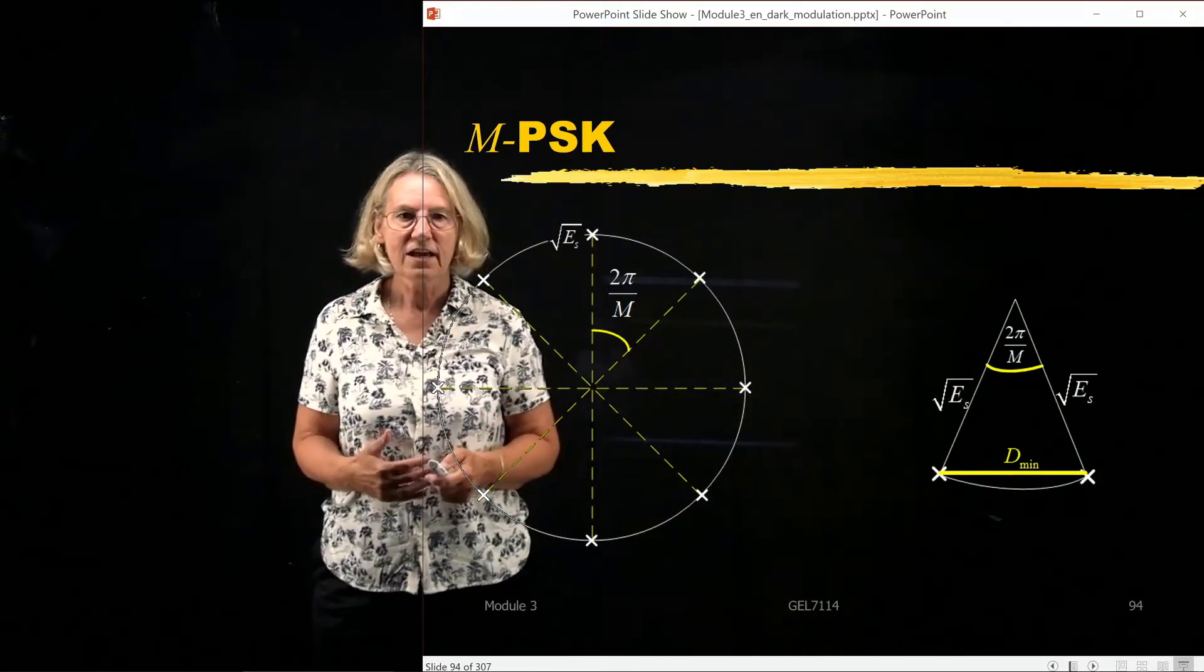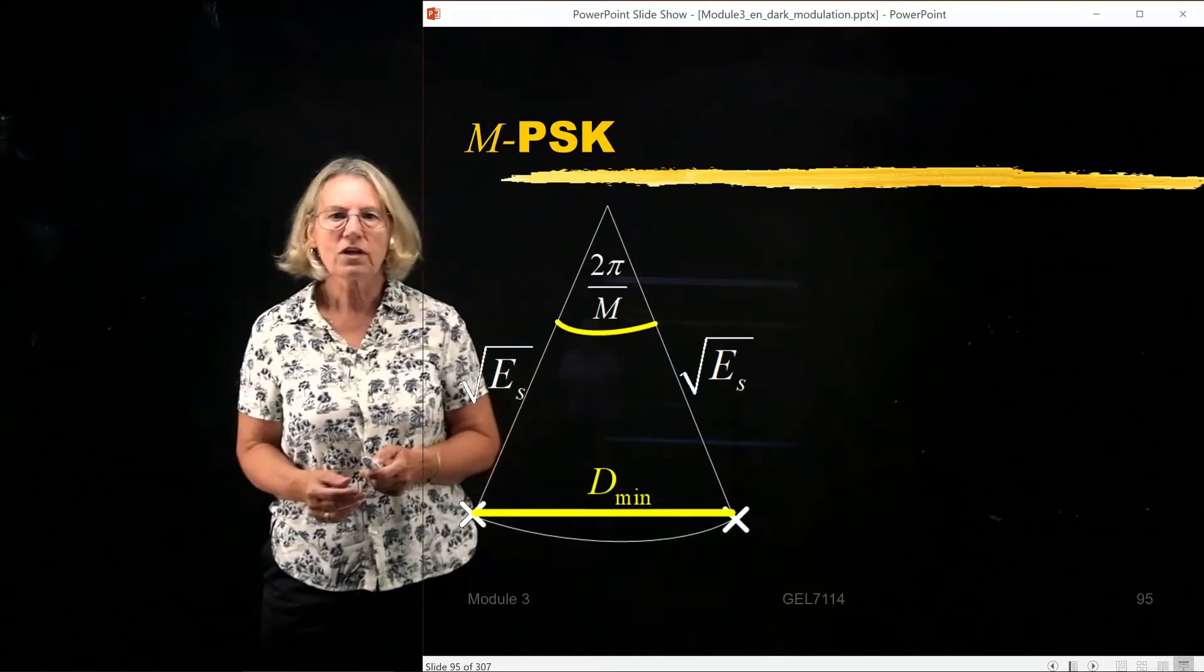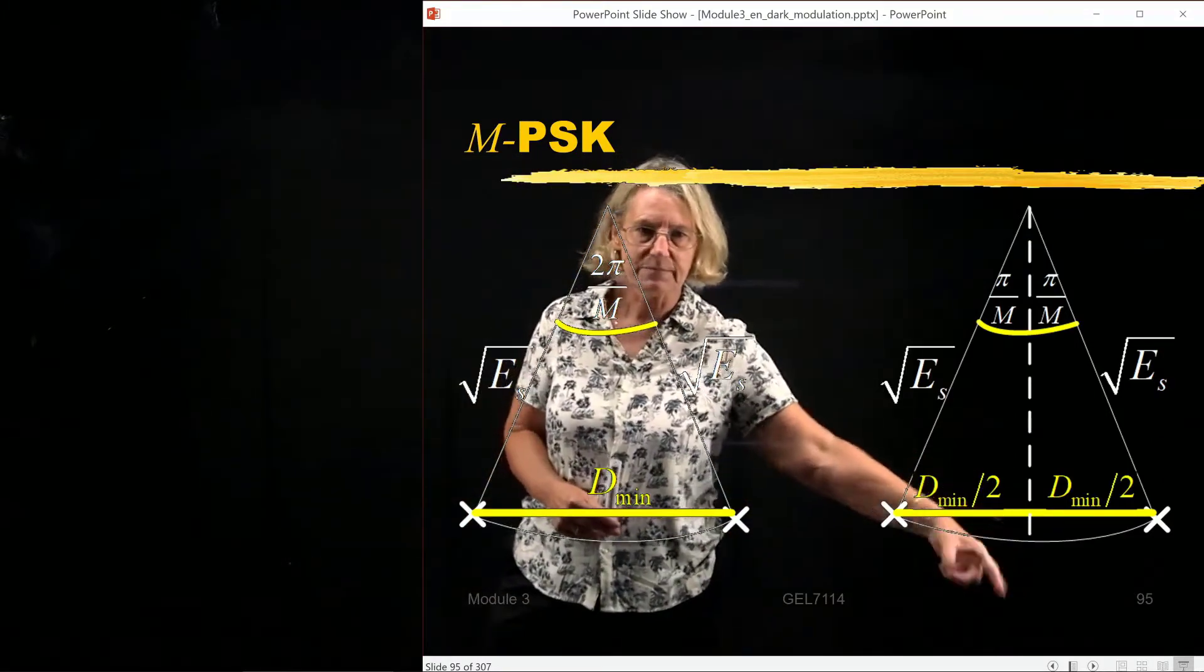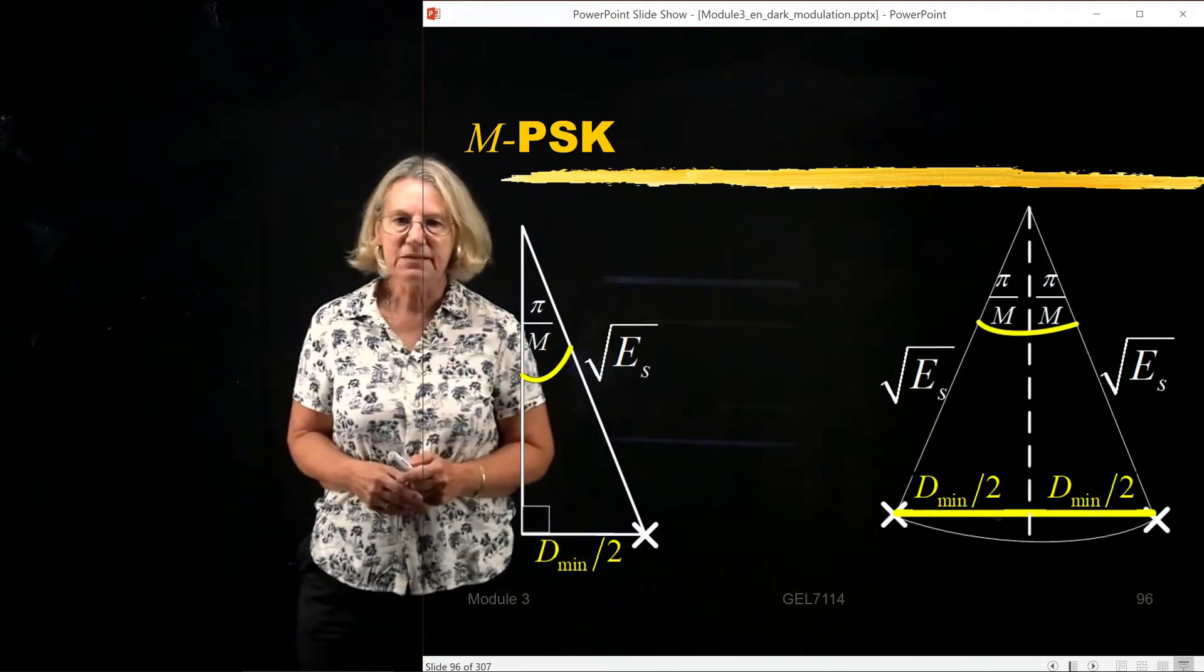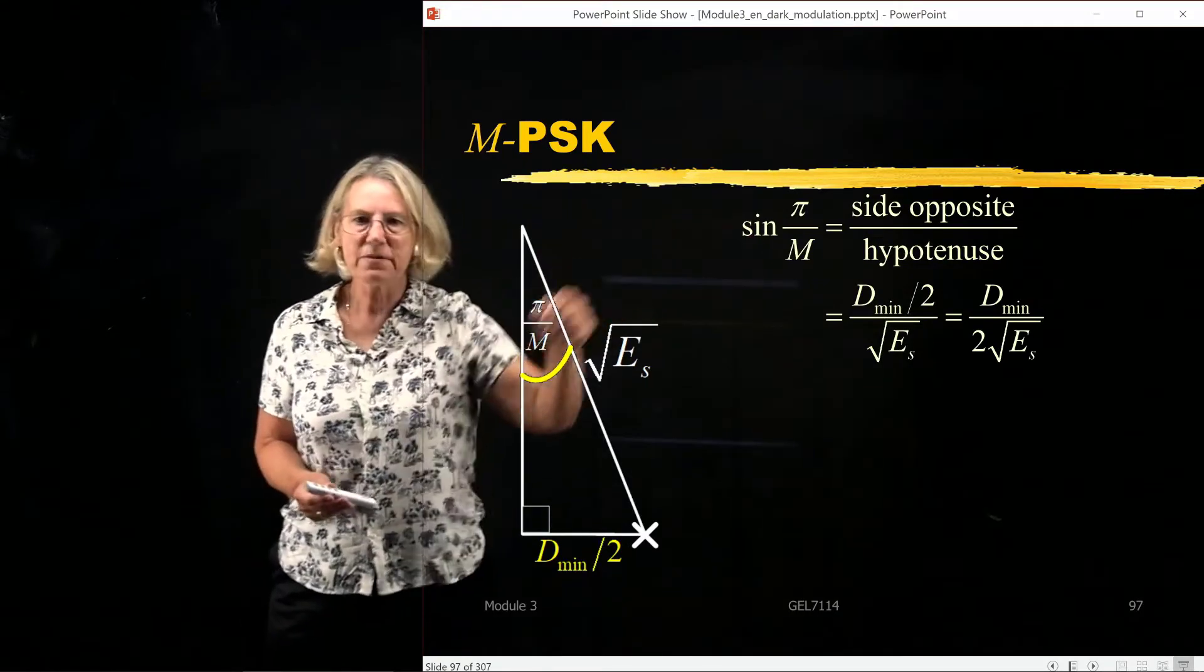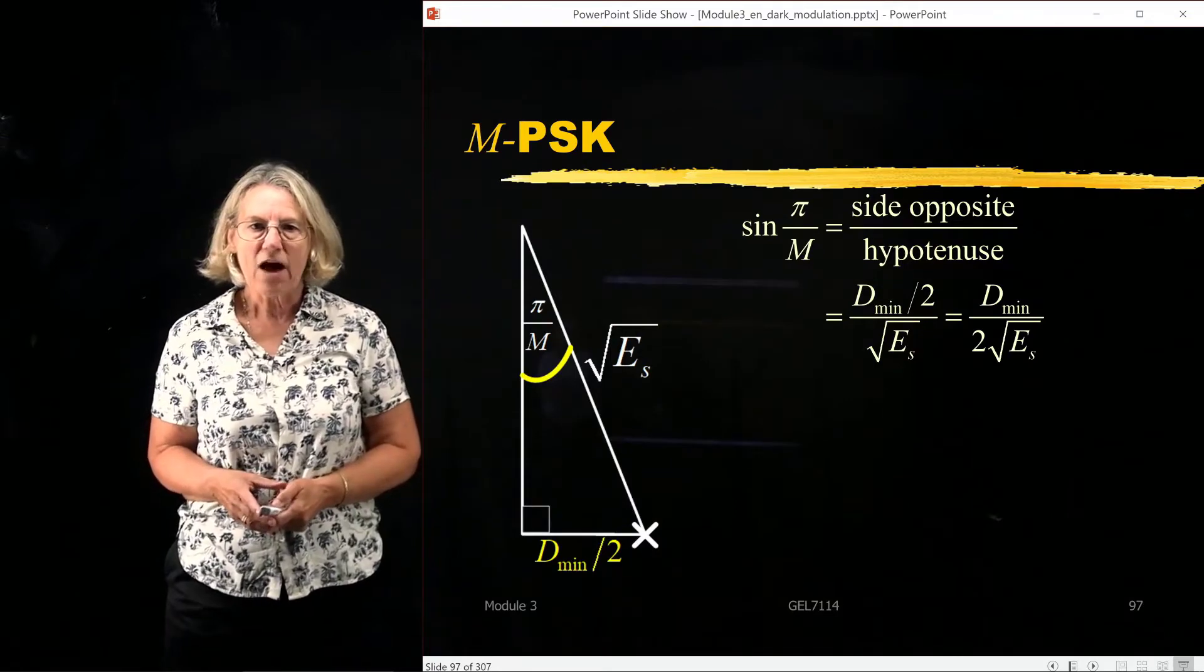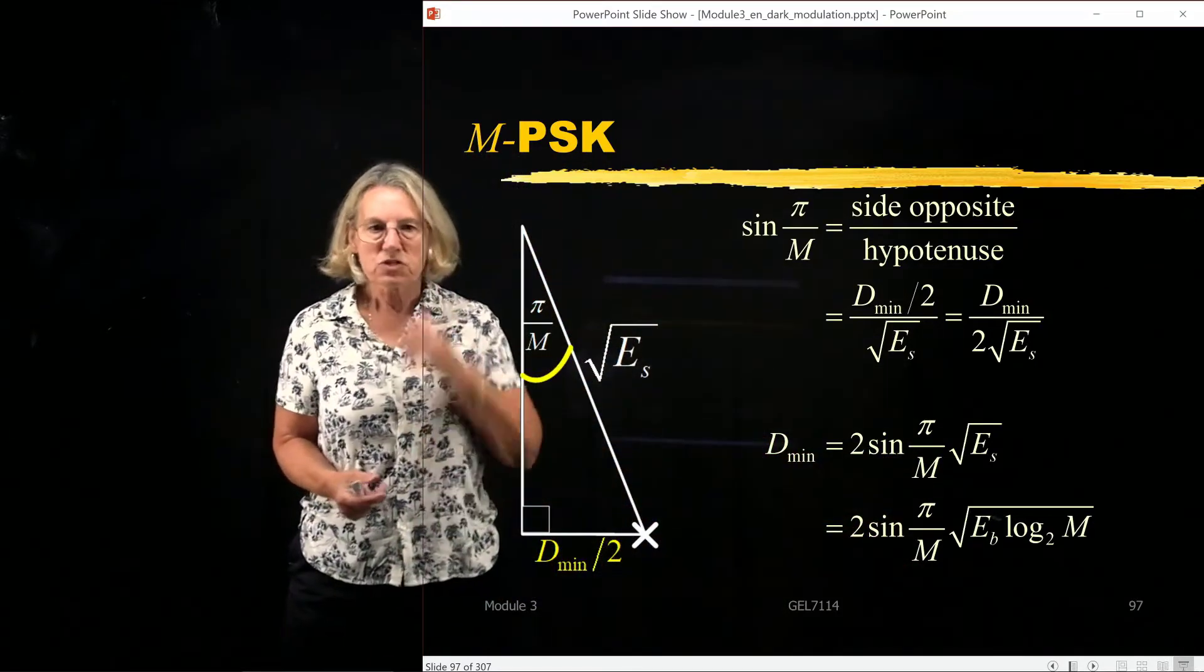So what I do is, of course, I take this triangle and I form a bisector. And the bisector will be a right angle. So I have a right angle that's formed here and the bisector divides this into π over M and π over M. And of course, the distances for this right triangle is D_min over 2, D_min over 2. And now I just use trigonometric identities to say that, to solve for D_min in terms of, in this case, the sine of π over M. So sine of π over M is the side opposite divided by the hypotenuse. So I know that sine of π over M is equal to D_min divided by 2, the square root of the average energy per symbol. So now I can solve for D_min. And so D_min is equal to 2 times the sine of π over M times the square root of ES.